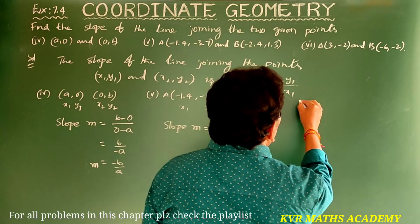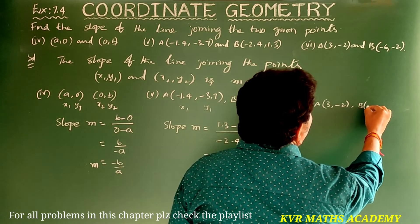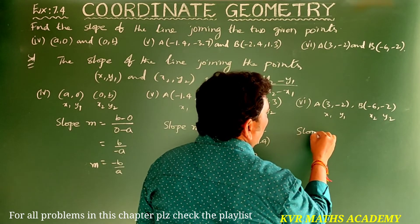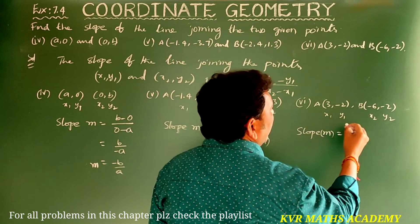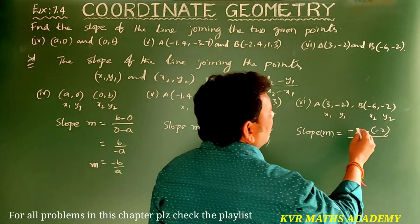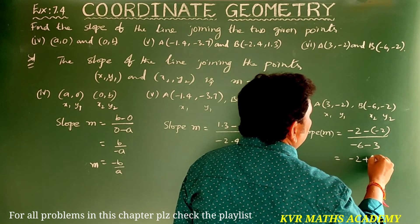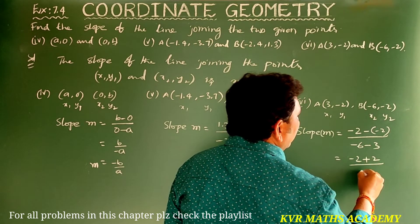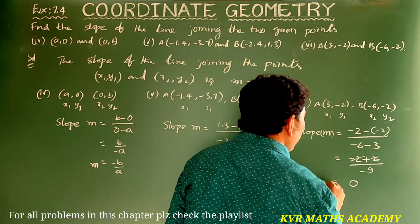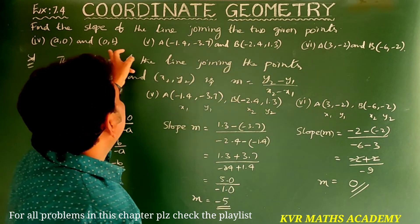Sixth one: given points are (3, -2) and (-6, -2). These are x1, y1 and x2, y2. Slope m = (-2 - (-2)) / (-6 - 3) = (-2 + 2) / (-9) = 0 / (-9) = 0. Slope m is equal to 0.